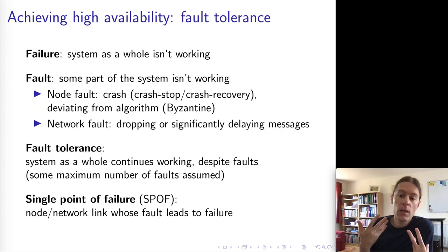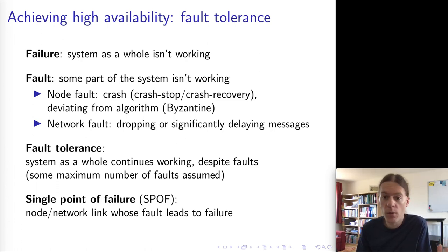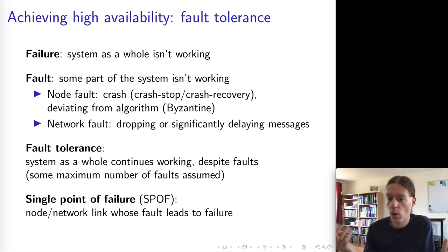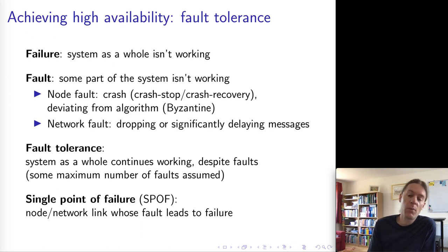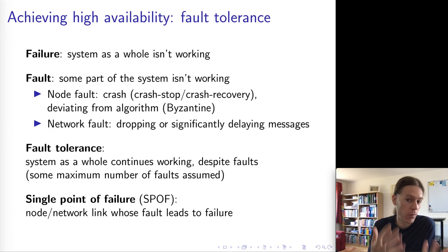In order to achieve very high availability, the way we typically do that in distributed systems is by fault tolerance. A fault is when some part of the system isn't working — we talked about node faults such as a crash, or network faults such as a network partition. We want the system to tolerate some number of faults. It doesn't make sense to say the system will tolerate all faults, because if all nodes crash and all network links go down simultaneously, the system can't make progress. But you might say the system will continue working if fewer than half the nodes have crashed — allowing one out of three, or two out of five to crash, while the remaining nodes continue running the service.